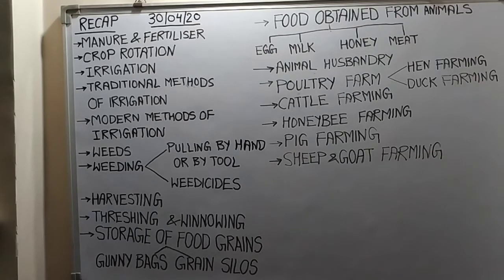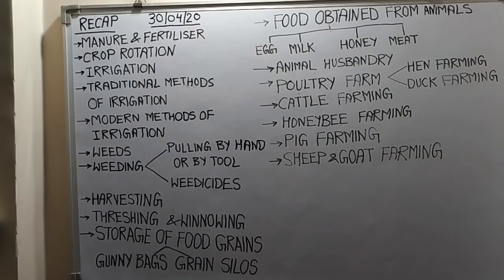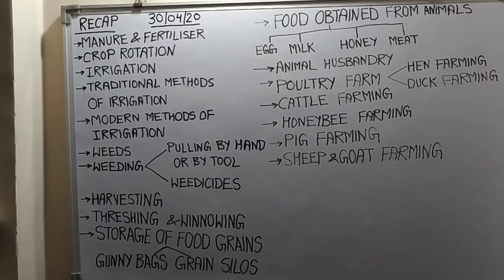The next activity done by the farmer is removing weeds. Weeds are the unwanted plants that grow along with the crop. As you can see in the picture, there are different types of weeds that grow with our main crop. It is very necessary to remove the weeds, otherwise they will use all the nutrients present in the soil. The process of removing weeds from the crop field is called weeding.